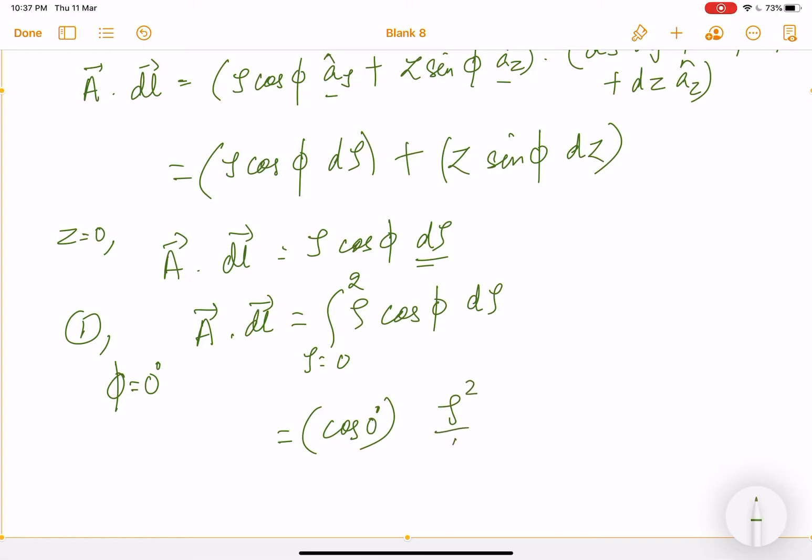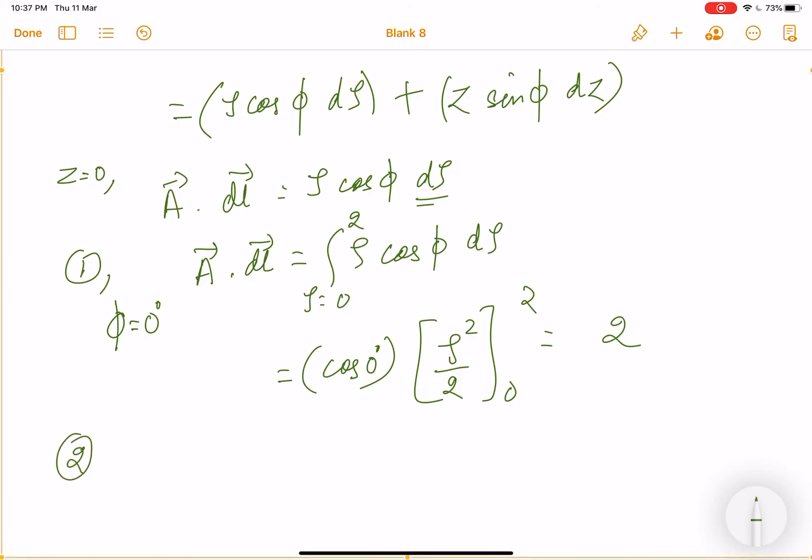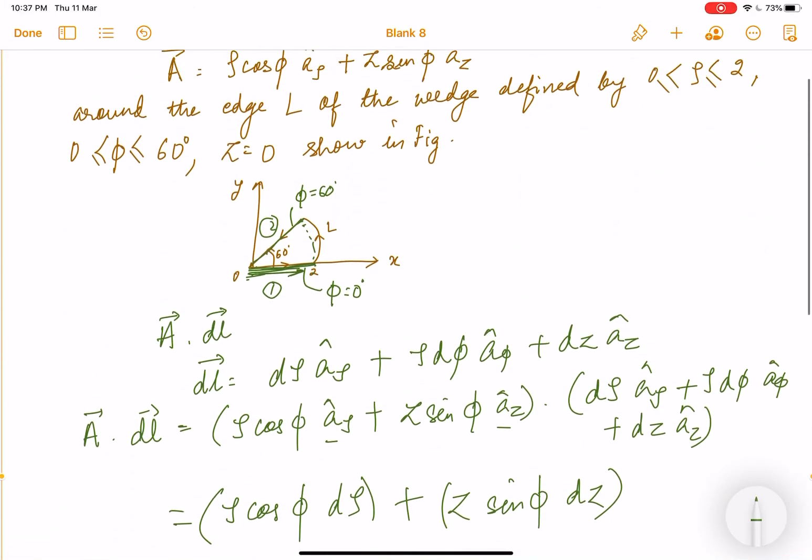φ is 0 degrees. So if I solve this, cos 0 degrees is 1. Then ρ dρ will be ρ²/2. So I'll get 4/2, which is 2. Then the next line, that is the second one,